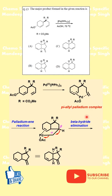In the beta-hydride elimination step, the sigma-alkyl palladium species undergoes beta-hydride elimination. Only one beta hydrogen is syn-periplanar to palladium, so elimination is highly selective.